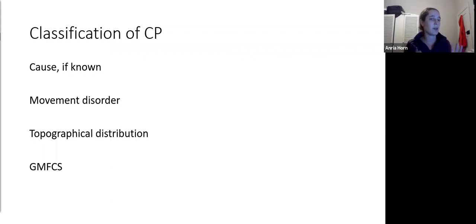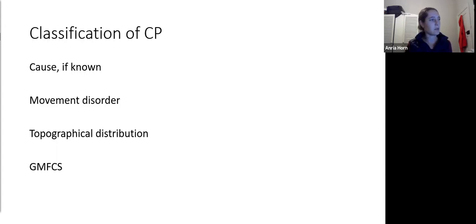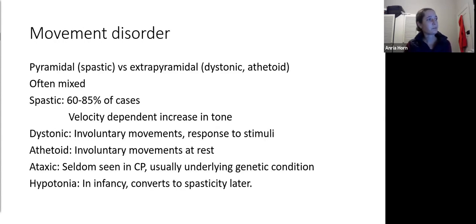There are four main classification systems for CP: by cause if known, by type of movement disorder, by topographical distribution, and by GMFCS classification. Movement disorders are broadly categorized as pyramidal — spastic CP — and extrapyramidal — dystonic or athetoid. They are often mixed, but the vast majority, 60 to 85 percent, will be predominantly spastic. Spasticity is a velocity-dependent increase in muscle tone.